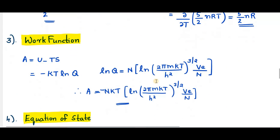Next we can find the work function or Helmholtz free energy. We have the equation A = U − TS = −KT log Q, which we already found in our previous video. Substituting log Q = N log[(2πmKT / h²)^(3/2) × V × (e/N)], we get A = −NKT log[(2πmKT / h²)^(3/2) × V × (e/N)].